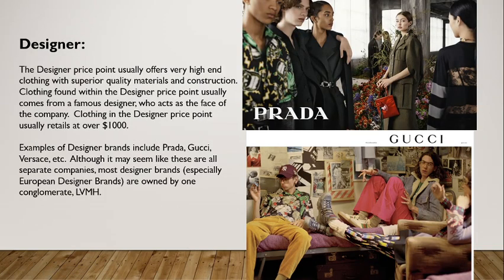Next we have the designer price point. It usually offers very high-end clothing with superior quality materials and construction. Clothing here usually comes from a famous designer who acts as the face of the company. Labels either have a very old designer attached to the house or a new designer who has given their name to the house. Even with old designer names, we typically know the famous designer behind it — like Karl Lagerfeld for Chanel, Alexander McQueen, and so on. Examples of designer brands include Prada, Gucci, and Versace.